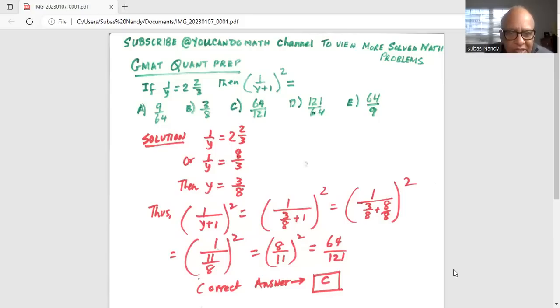So 3 plus 8 is 11 over 8, so it is 1 divided by 11 over 8 squared. Now 11 over 8 is in the denominator, when I flip it becomes 8 over 11 squared. Now 8 squared is 64, 11 squared is 121.